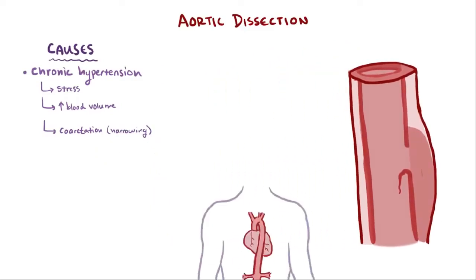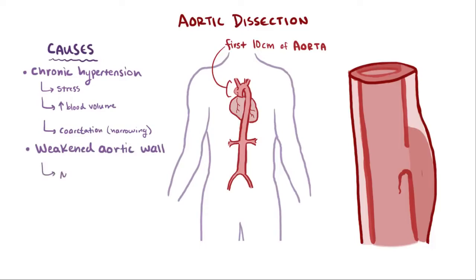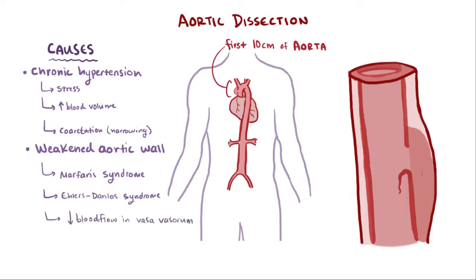Aortic dissections most often happen in the first 10 centimeters of the aorta, closest to the heart. In order for an aortic dissection to occur, an underlying condition usually has to exist that weakens the aorta's wall. Connective tissue disorders like Marfan's and Ehlers-Danlos syndrome can also cause a dissection, as well as a decreased blood flow to the vasa vasorum.